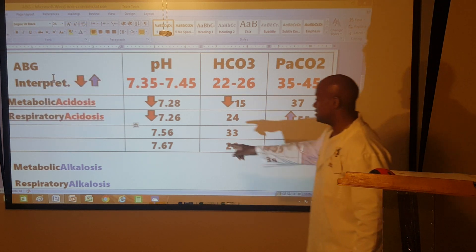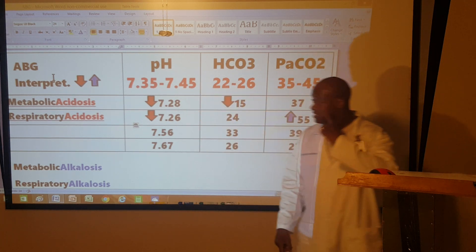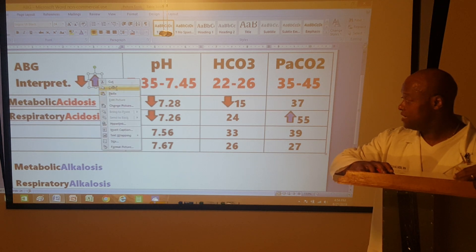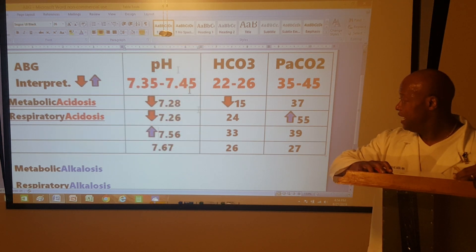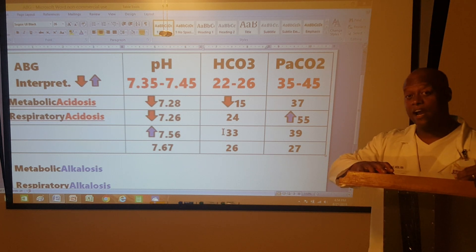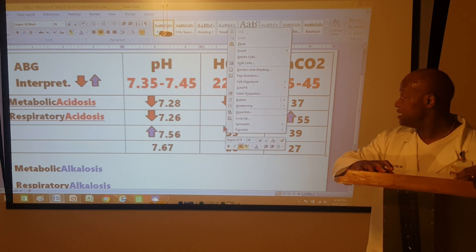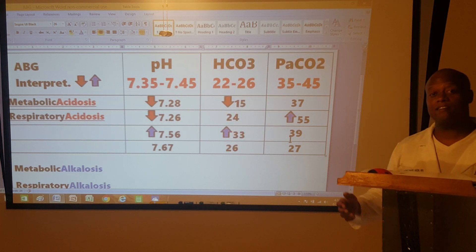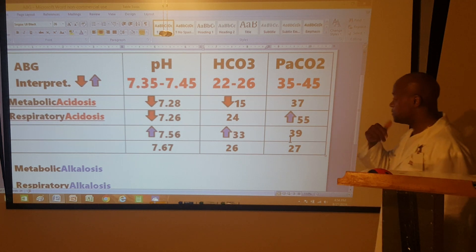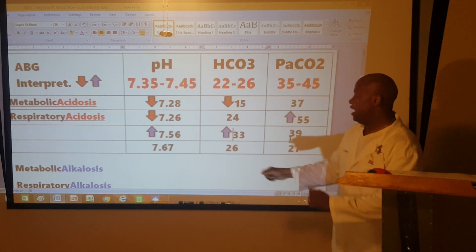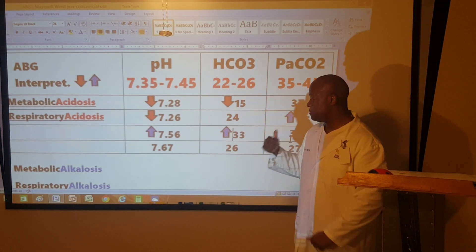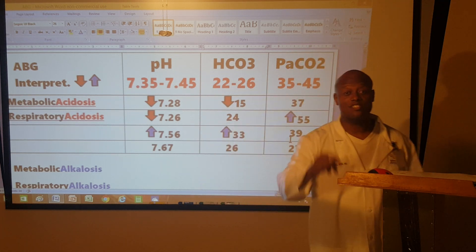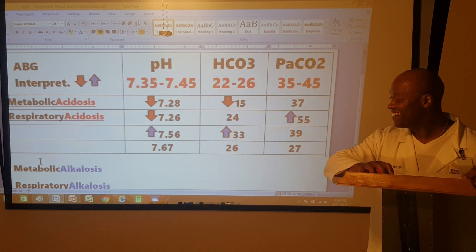Next: pH is 7.56 — higher than 7.45, so it gets an up arrow. Bicarb is 33 — higher than 26, so that gets an up arrow. CO2 is 39 — fits within 35–45, so no arrow. Both arrows point up — same direction — metabolic equal. It's alkalosis, so this is metabolic alkalosis.